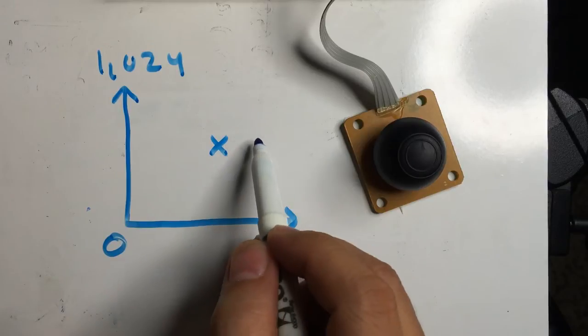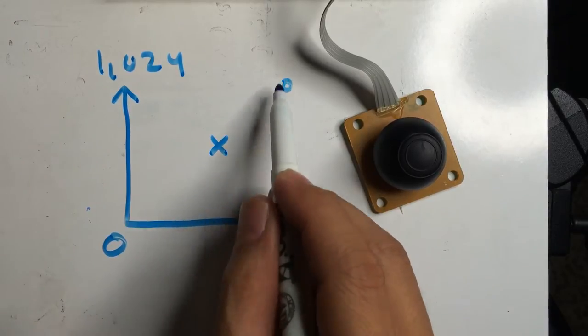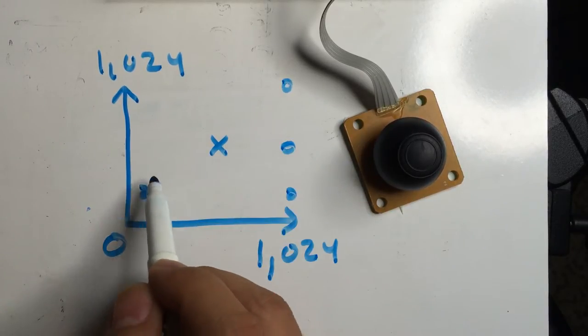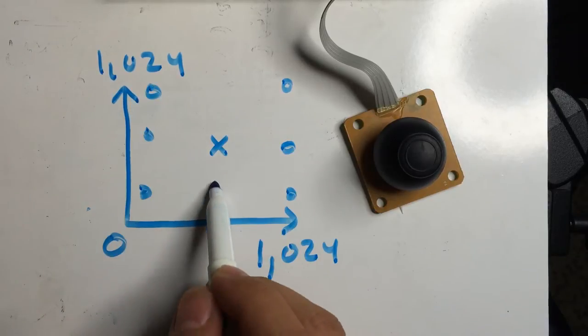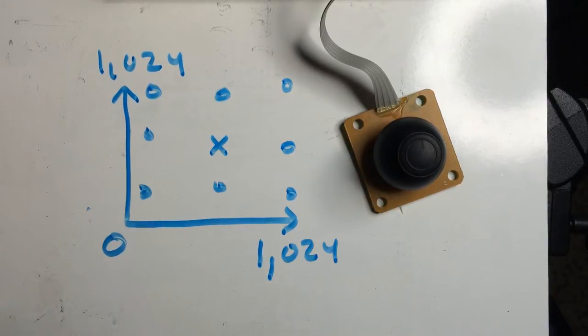When it's at rest, you're going to see that the joystick is actually at 450, 450. Then when you move it around, you're going to be able to give it placement, so that's how you tell where it is.